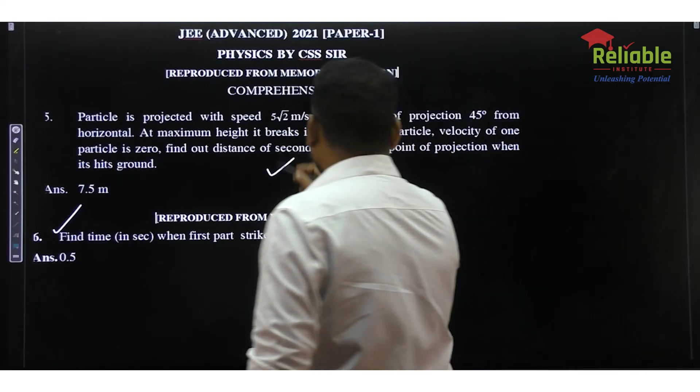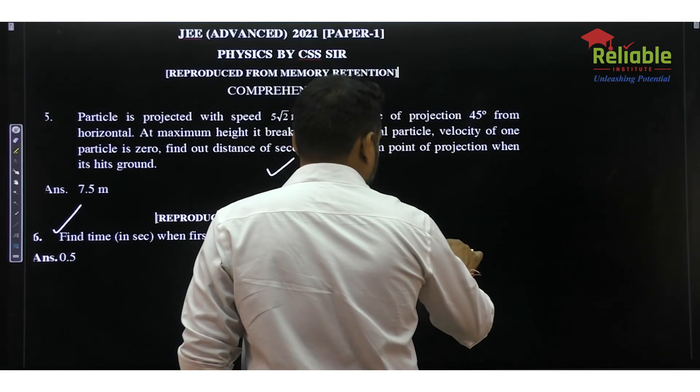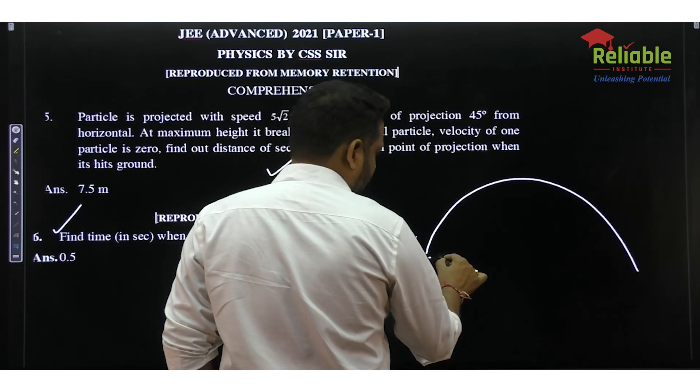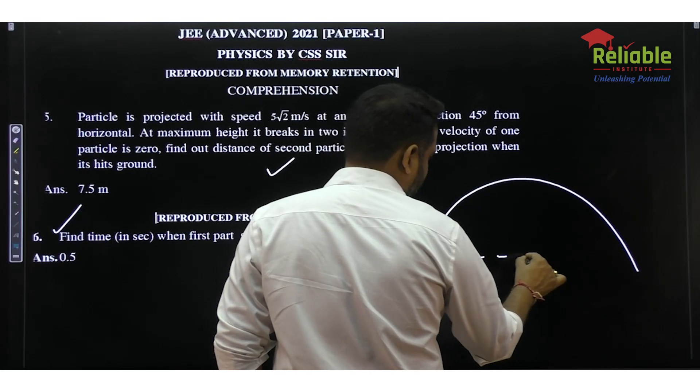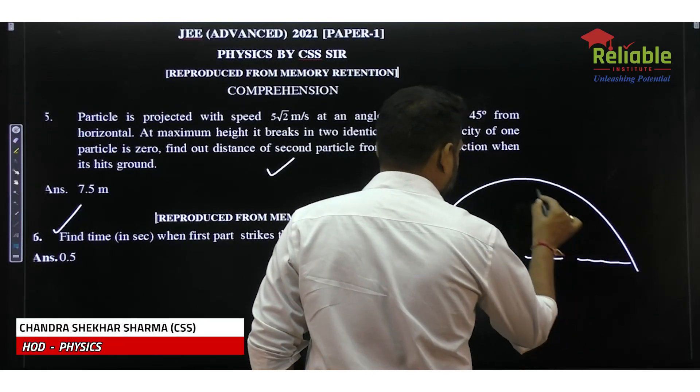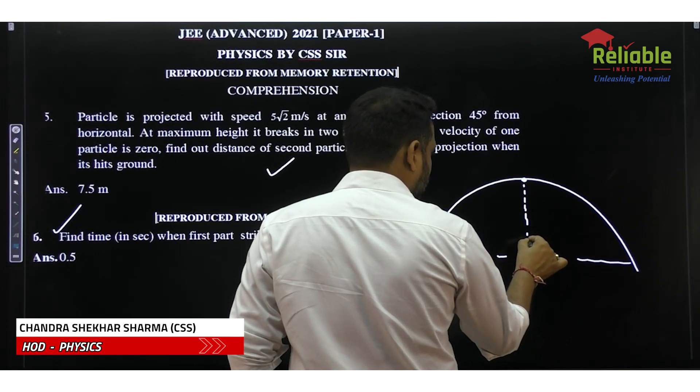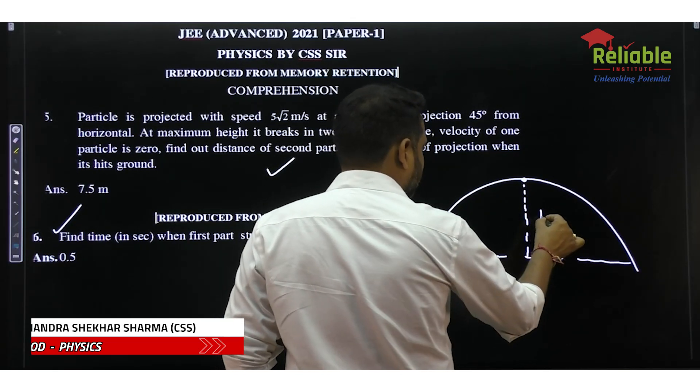So, this is from 5 root 2. And we know that the highest point is where it will be. We know the peak point. We know the first part will fall to the ground. The maximum height is h.